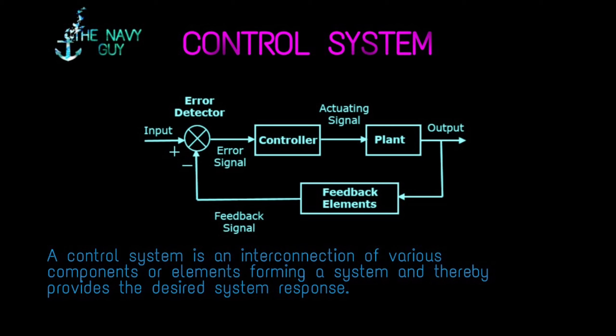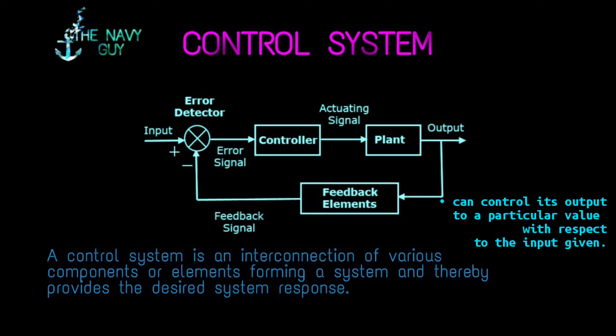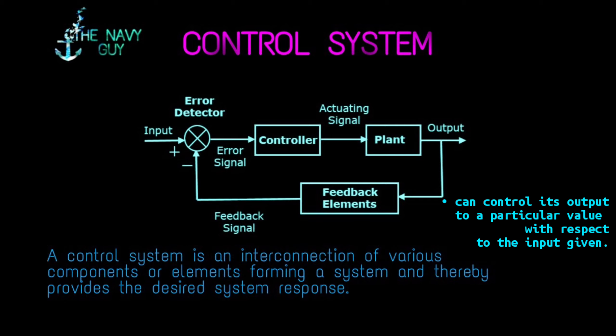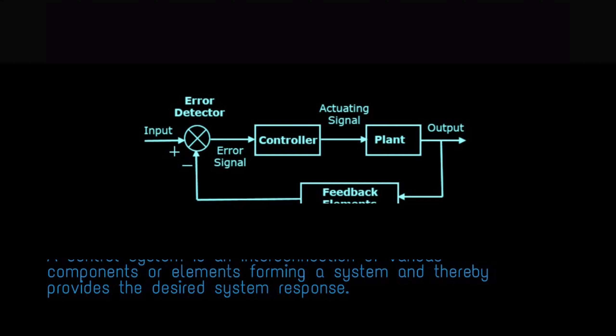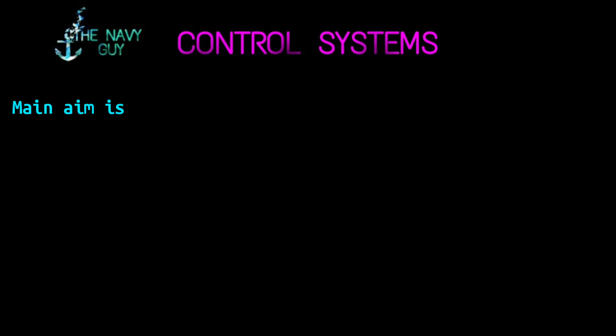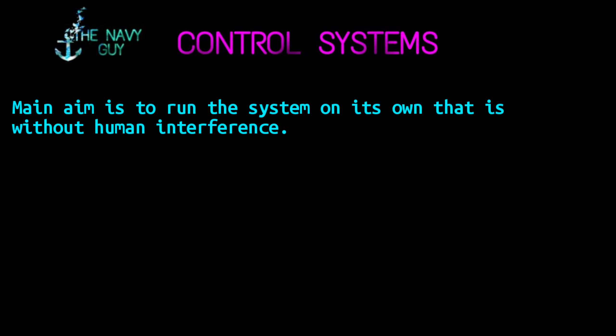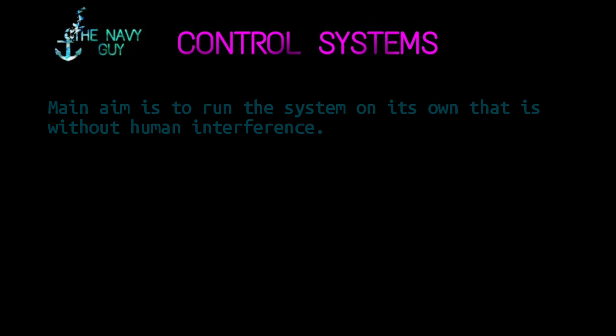A control system is an interconnection of various components or elements forming a system, thereby providing the desired system response. A control system can control its output to a particular value, perform a sequence of events, or perform an event if specified conditions are satisfied with respect to the input given. The main aim of developing a control system is to run the system on its own, that is, without human interference.